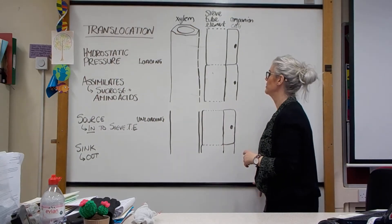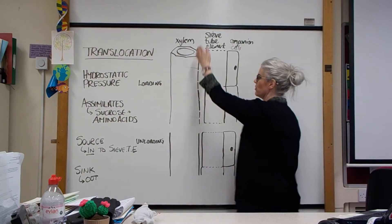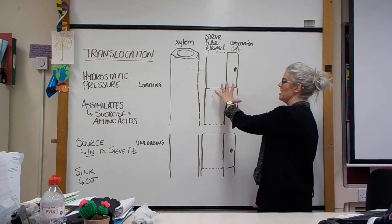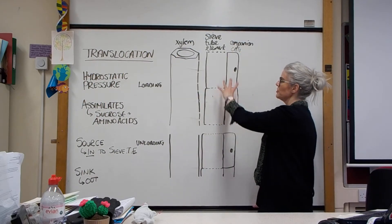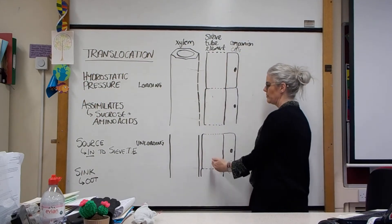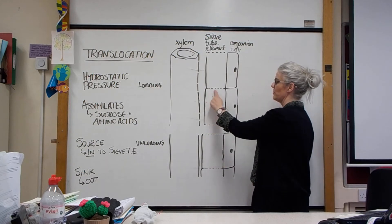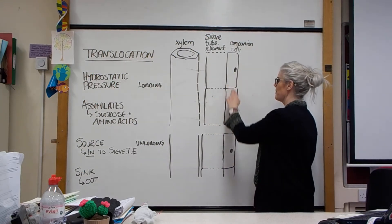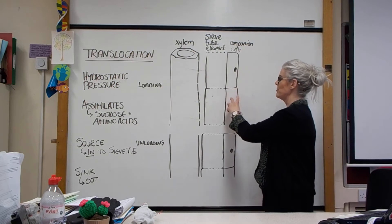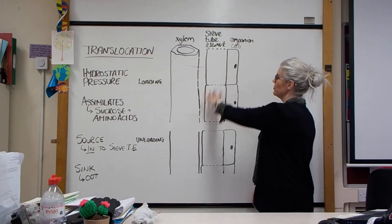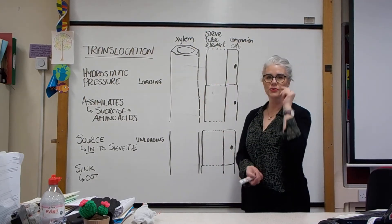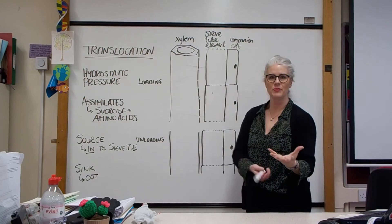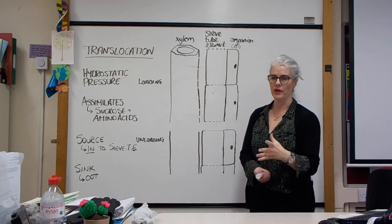We've got xylem running alongside your phloem tissue. Phloem tissue comprises sieve tube elements with pores in the sieve plates, and companion cells. Companion cells are essential because sieve tube elements can't carry out many processes themselves — they only have a small amount of cytoplasm.